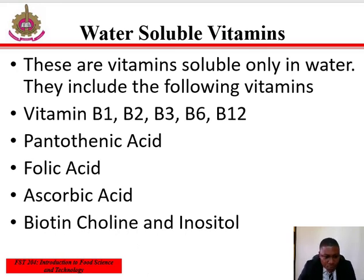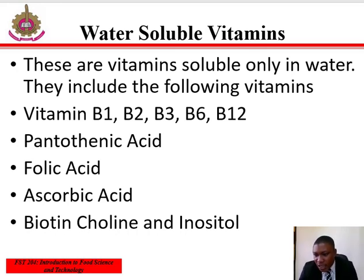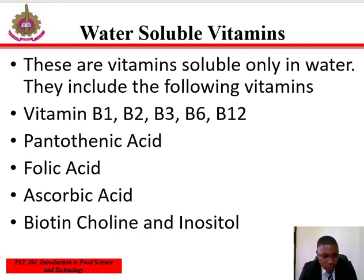Thiamine, which is B1, consists of a complex molecule containing a pyrimidine and a thiazole nucleus. It functions as a coenzyme in the form of thiamine pyrophosphate in some amino acids and carbohydrates intermediary metabolism. The symptom of thiamine deficiency is known as beriberi.